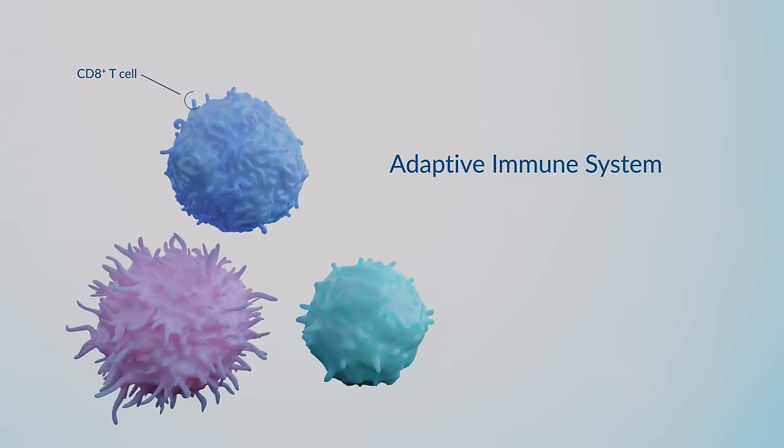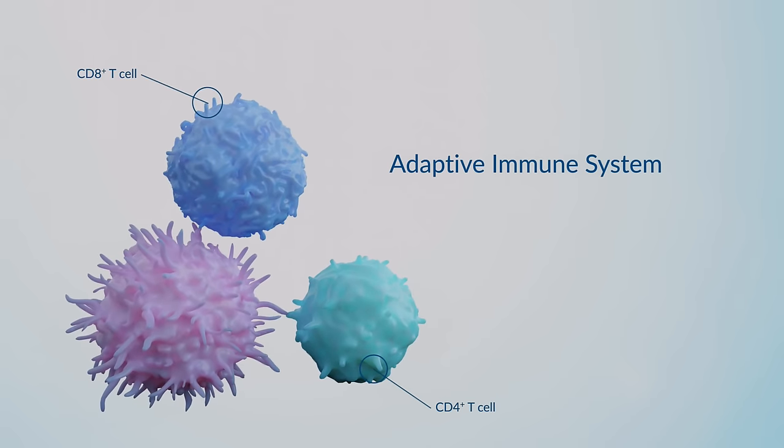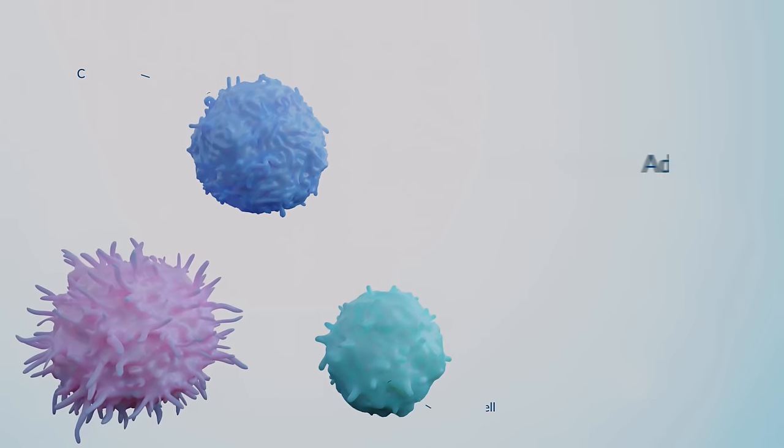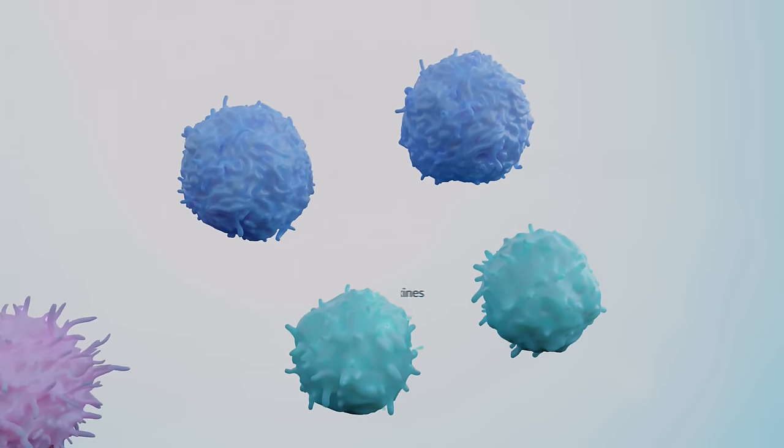The adaptive immune system is perfectly equipped to recognize and react to specific threats and holds an arsenal-style memory of previous attacks.